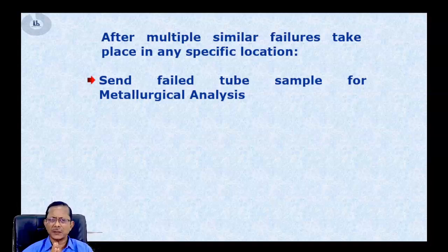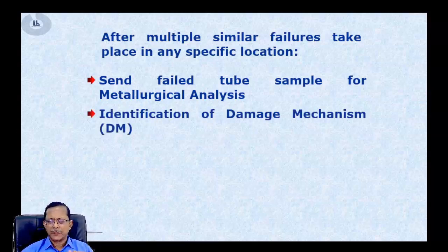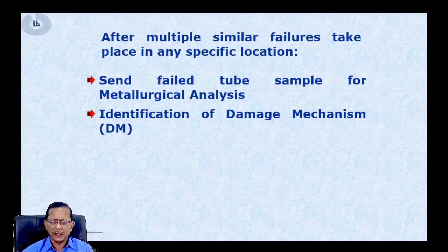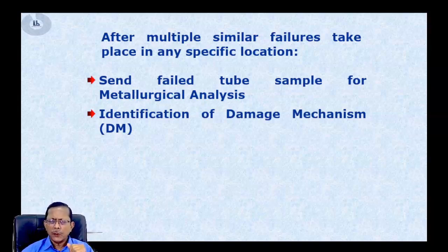The lab gives a report showing microstructure analysis, the original material metallurgy specification, whether it matches the OEM specification or not, and finally a conclusive identification of the damage mechanism — whether the tube failed due to erosion, corrosion, or overheating, and if overheating, whether it was short-term or long-term overheating.